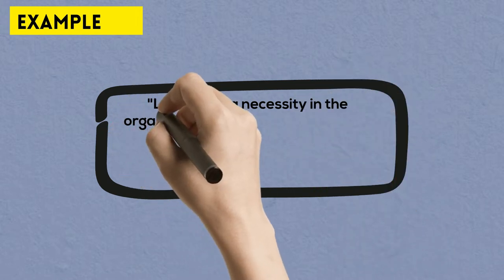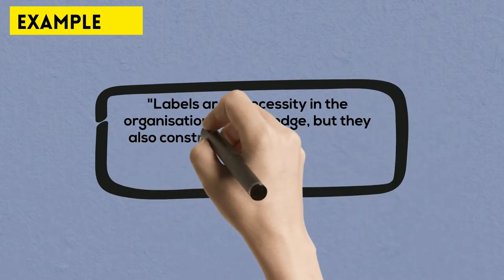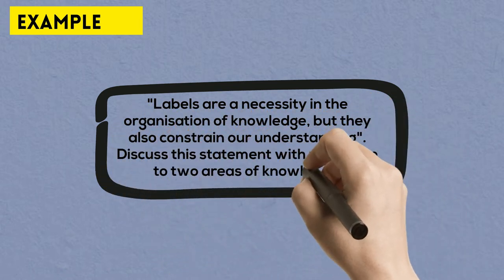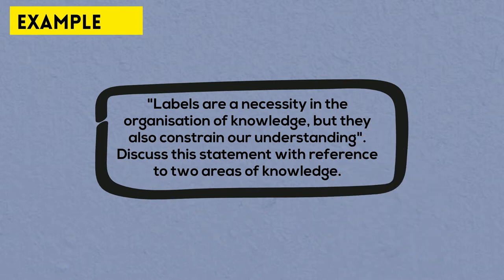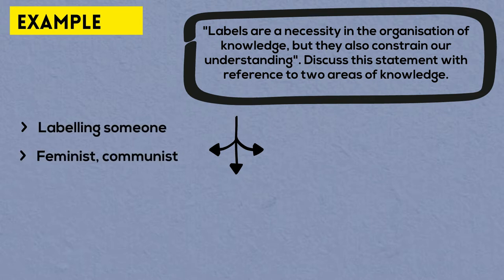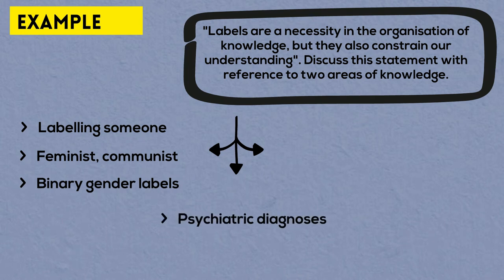One of the prescribed essay titles in May 2021 was: Labels are a necessity in the organization of knowledge, but they also constrain our understanding. Discuss this statement with reference to two areas of knowledge. What are the first couple of things that come to your mind when you read and think about this title? If you are exposed to the same kind of information as an average human being, you will have the same kinds of associations. You will think about labeling someone as in stereotypes and social categories, for example, labeling someone as a feminist or a communist or binary gender labels. You might think about labeling someone as mentally ill, as in diagnostic categories in psychiatry such as the autistic spectrum, or depression, or social anxiety.